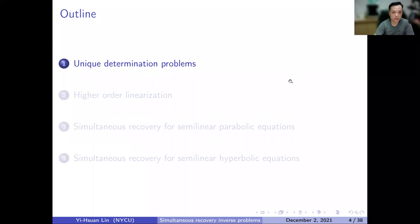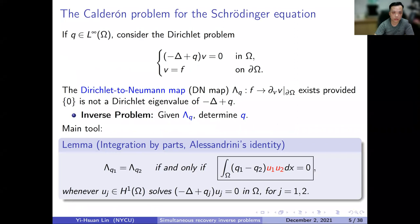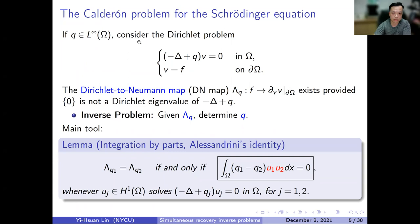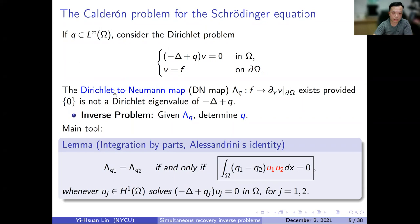The first part is unique determination problems. Everyone is familiar with the Calderón problem, so I start from the Calderón problem for the Schrödinger equation in the local, linear case. Consider the potential Q as a bounded potential, and the Dirichlet problem: minus Laplacian plus Q applied to V equals zero, with V equal to F on the boundary. This is well-posed if we avoid zero being a Dirichlet eigenvalue for minus Laplacian plus Q. We can then define the corresponding Dirichlet-to-Neumann map — I'll call it the DN map for the rest of this talk.